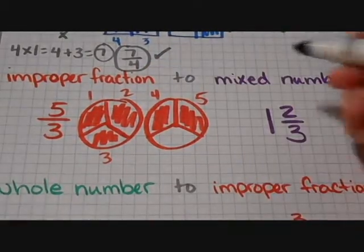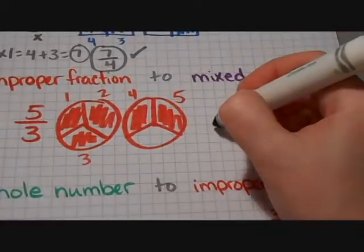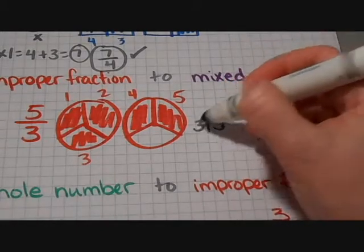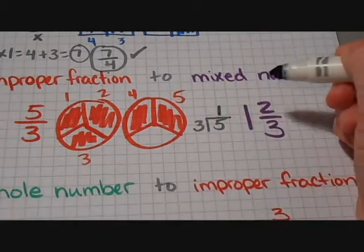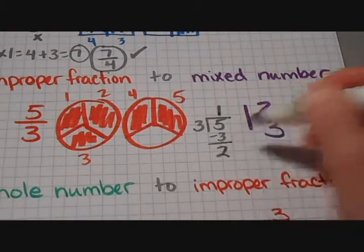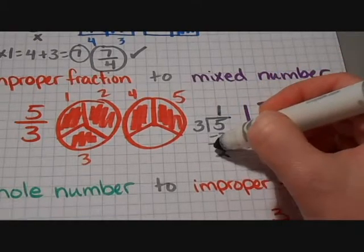A fraction is just a division problem. So what we're going to do is five divided by three. Three can go into five one time. One times three is three. So we do our subtraction and we've got that two left over.